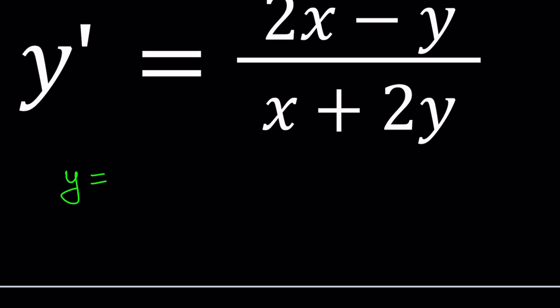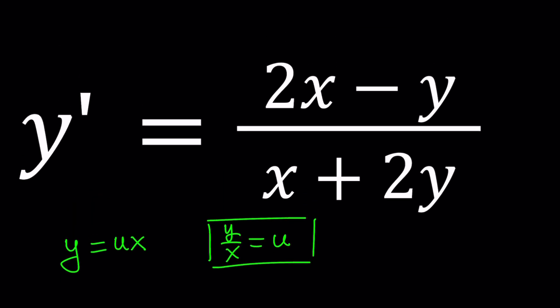We're going to go ahead and replace y with ux. In other words, we want y over x to be equal to u. Of course, when you write it this way, you don't want x to be zero, and what happens if x is zero? Then that's a separate equation, right? That's a separate discussion. For example, in the original problem, if x is zero, then you can kind of look at what happens, but we're going to try to solve it in the general case, okay?